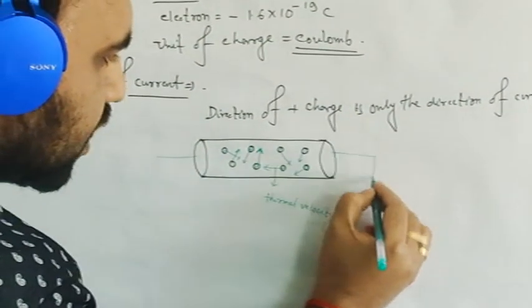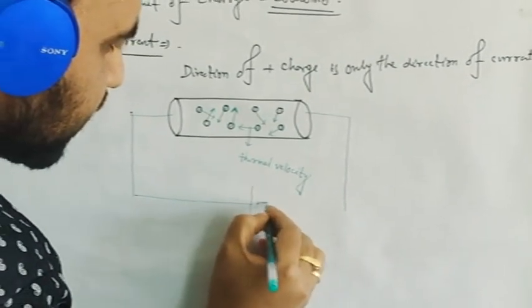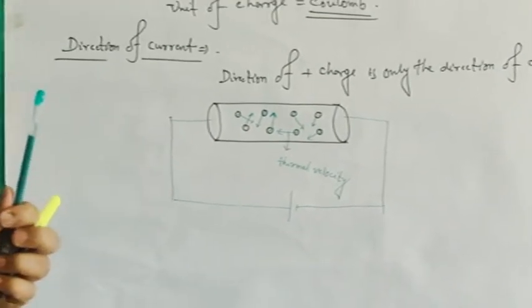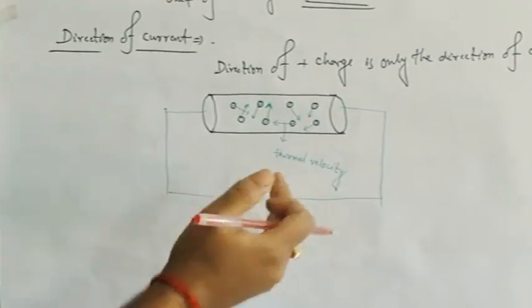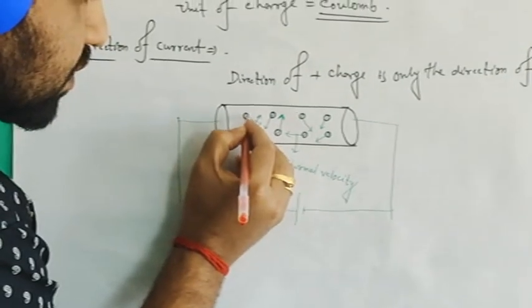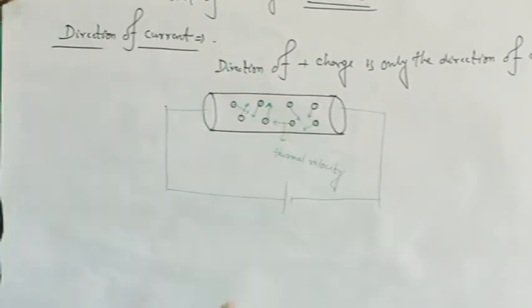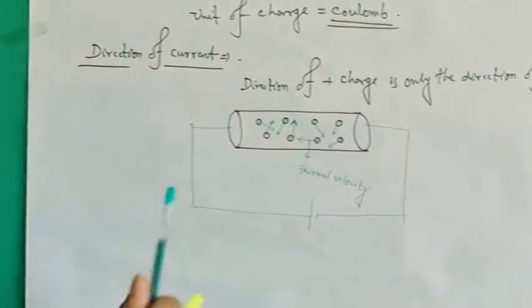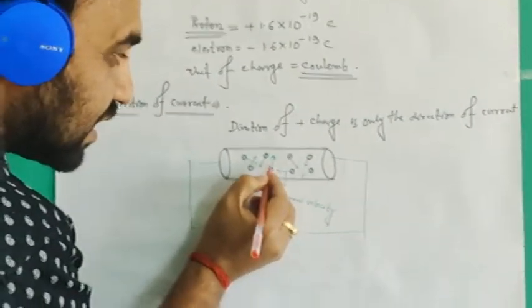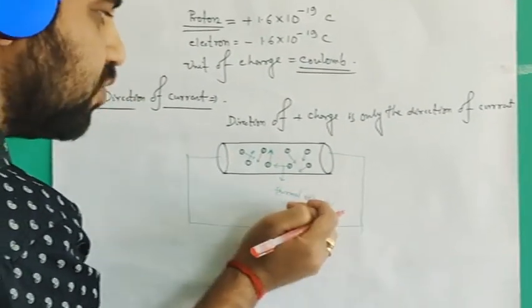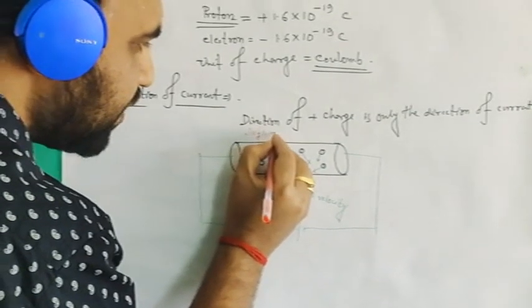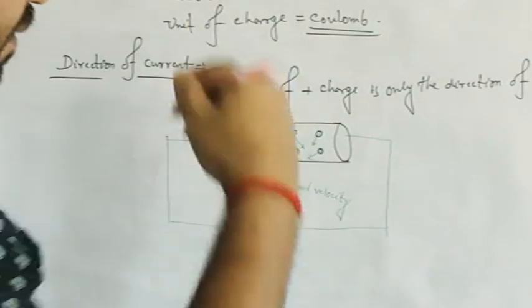When we connect this wire to a cell or a battery, at that time some field is set up, or you may say there is a potential difference. We will discuss what is potential difference in the next video. Due to this potential difference, all the electrons within the wire acquire a new velocity and start moving in a particular direction. All the electrons suddenly stop their thermal velocity and acquire a new velocity which is known as drift velocity.